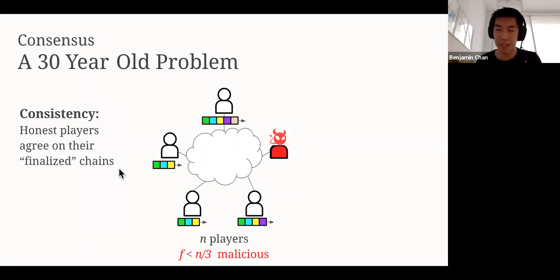Honest players must agree on their finalized chains. What do I mean by that? Let's say you and I were both players in a consensus protocol. If you think that the first block is green, I had also better think that the first block is green. If you think that the second block is blue, I should think that the second block is blue. Maybe you think that the fourth block is purple. Maybe I haven't seen the fourth block yet. That's allowed. Maybe my internet connection suddenly dropped. But by the time I catch up, I should also think that the fourth block is purple. So really, we should be agreeing on the state of the blockchain. That's what I mean by consistency.